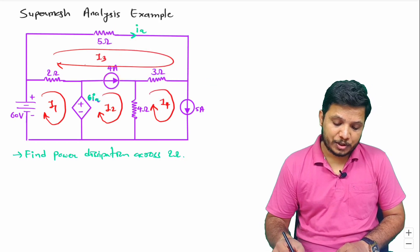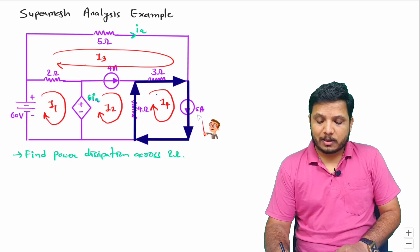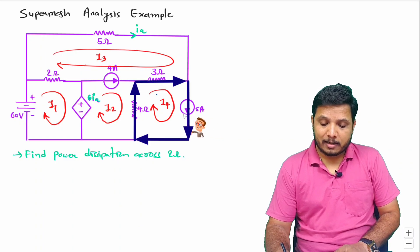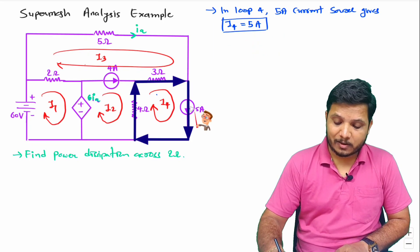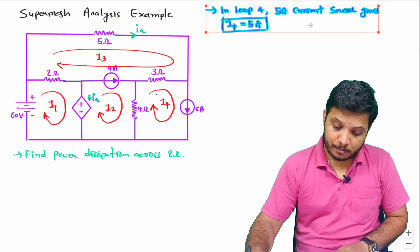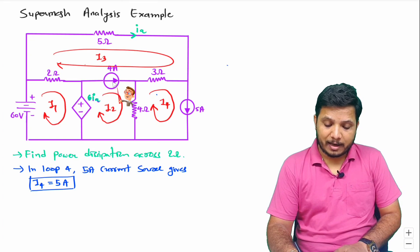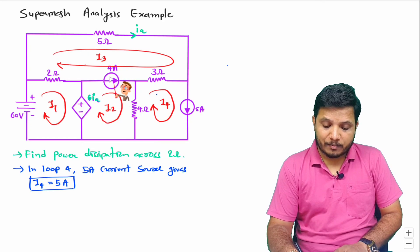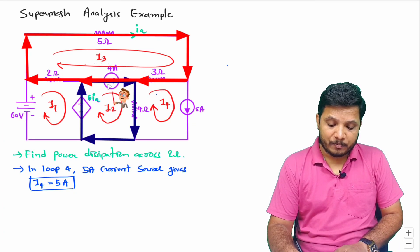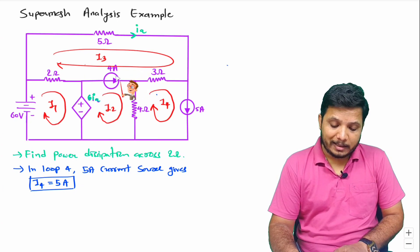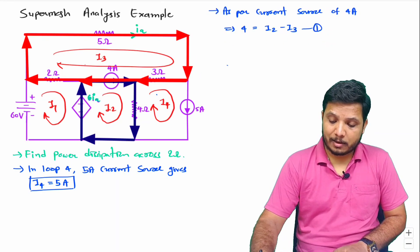Let us solve this question step by step. If you observe this fourth loop, we have a current source of 5 ampere. So directly I can say through loop four, current is 5 ampere — so one equation is already solved. Now, in this loop we have a current source of 4 ampere. I2 is in the direction of 4 ampere and I3 is in the opposite direction, so I can say I2 minus I3 equals 4 ampere. Let us call this equation 1.